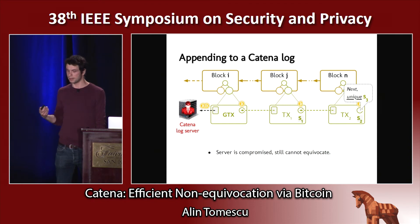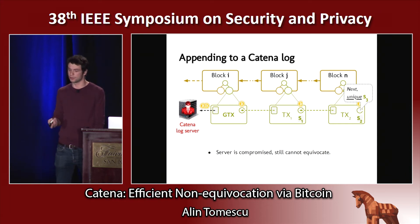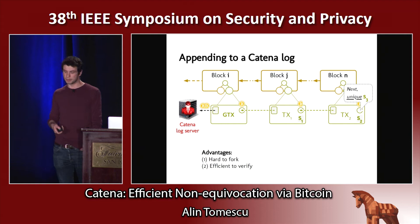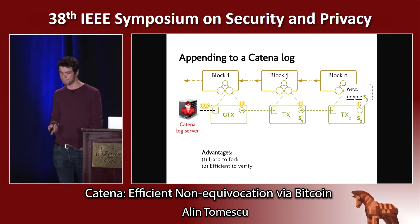What this means is that if the server is compromised, it still cannot equivocate. If the server wants to issue two statements S3 and S3 prime, it has to double spend the output in TX2, which Bitcoin miners prevent. This is nice because it's as hard to fork as the Bitcoin blockchain — to double spend in Bitcoin, the best you can hope to do is fork the blockchain. But it's efficient to verify.